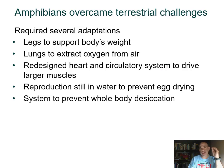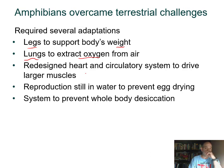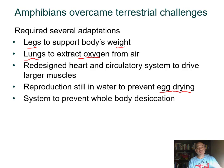There were several challenges to overcome when moving onto land. You need legs to support weight, lungs to get oxygen from the air, and a redesigned heart capable of driving larger muscles for moving on land. For amphibians, reproduction still required water to prevent eggs from drying out—similar to the problem plants had until the seed evolved. Amphibians also need protection against whole-body desiccation.